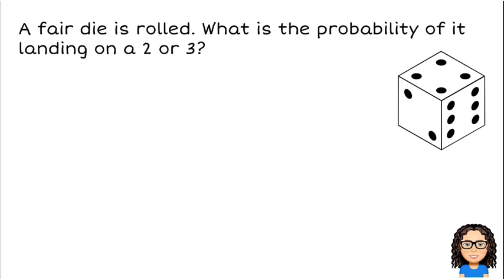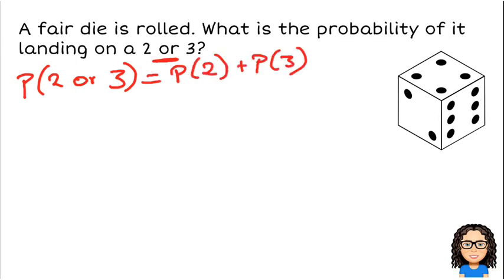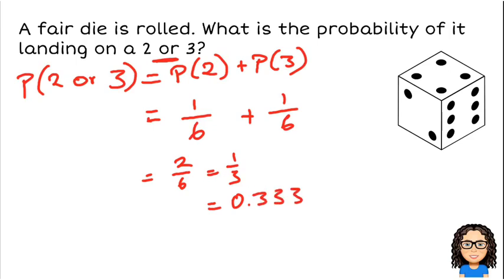Last question. A fair die is rolled, what's the probability of it landing on a 2 or a 3? So there's that word, or. So we've got to remember that when we're talking about or, that means to add in probability. So we want the probability of 2 or 3. So I want to do the probability of a 2 plus the probability of a 3. So on a dice there is 1, 2, and there are 6 faces on the dice. For the 3 there is 1, 3 on a dice, and there are 6 outcomes. So if I add that together, that gives me 2 out of 6, or 1 out of 3. Or if you prefer it as decimal, 0.3333, and I would go to 4 decimal places.